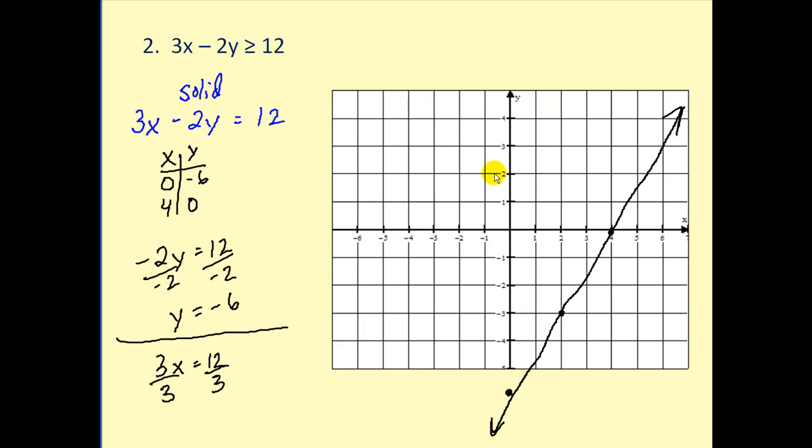Because this is not solved for y, let's pick a test point. Again, we'll choose (0, 0). So we'll substitute 0 for x and 0 for y. So the left side would be 0. And the question is, is this true or false? Is 0 ≥ 12? And that's false. So if this point is false, this entire half plane would be false.